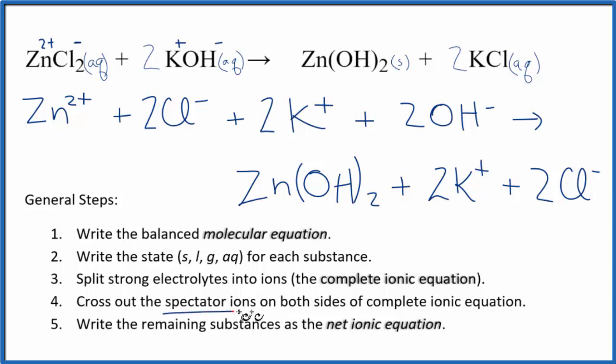We can now cross out spectator ions. These are on both sides of the equation. Really, they don't change, so we're not interested in them. So I have 2 chloride ions here in the reactants, and 2 in the products. I can just cross those out. Same for the potassium ion. 2 here, products 2. Cross those out.